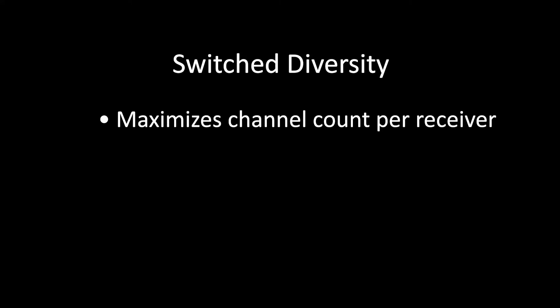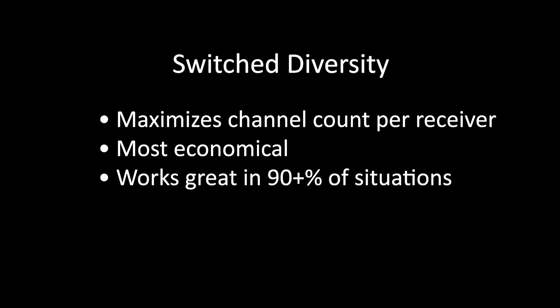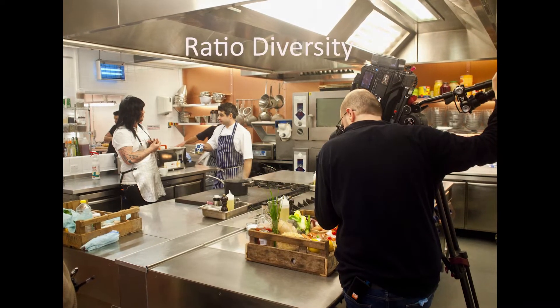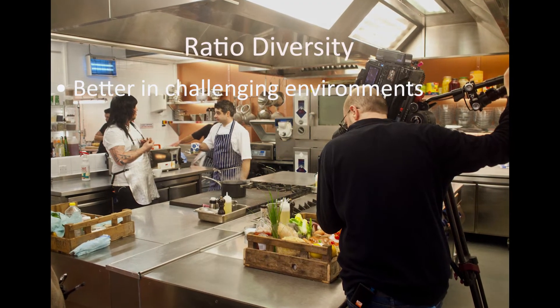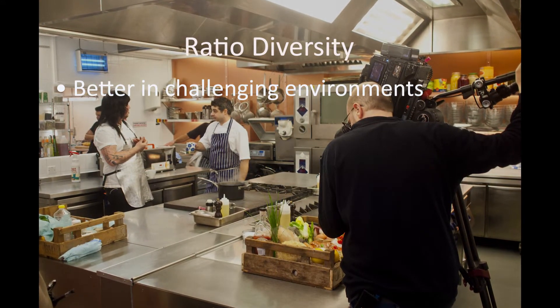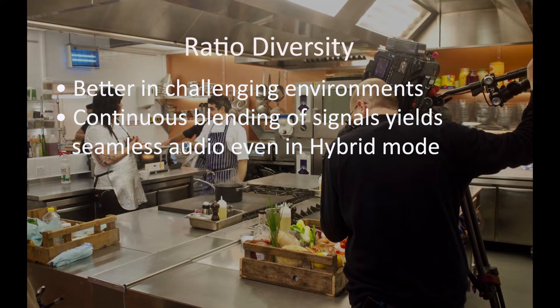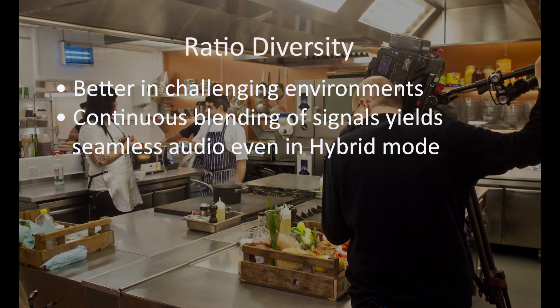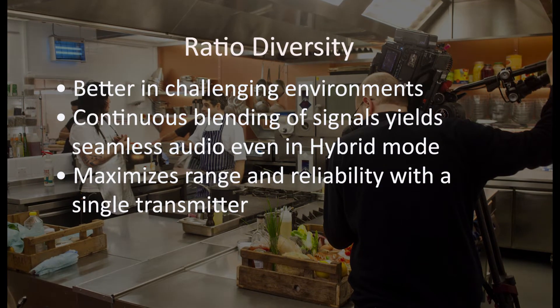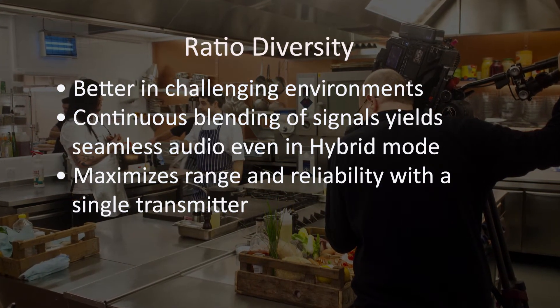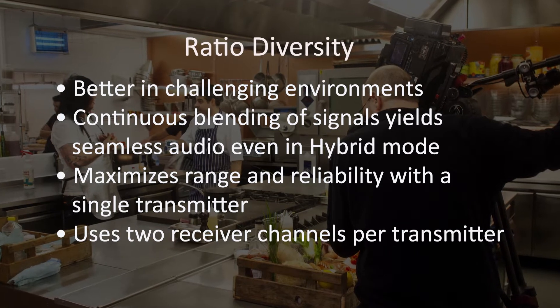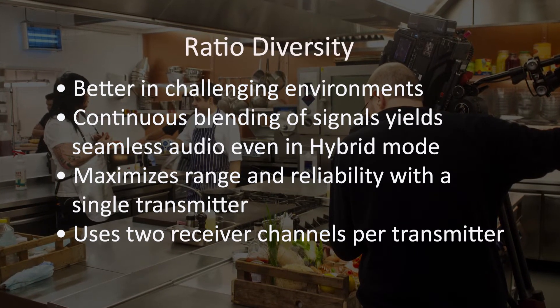Switch diversity is ideal when you need maximum channel counts from your hardware and you're getting dropout-free signals — usually outside or possibly inside with minimal metallic reflective surfaces. This is the most economical method and works well in 90-plus percent of all cases. Ratio diversity becomes more important in challenging RF environments, particularly if the location has a lot of metallic surfaces. When you're using a single transmitter on one frequency, this method continuously blends the audio from both channels, maximizing the reliability and range of the system. Ratio does use two receiver channels per transmitter, which reduces the ultimate channel count from your receiver hardware.